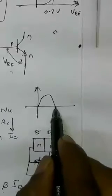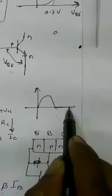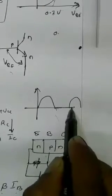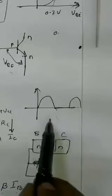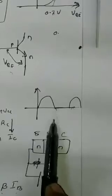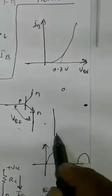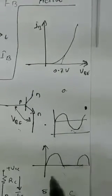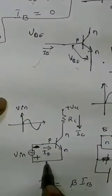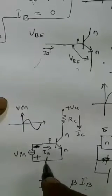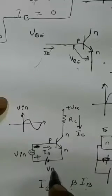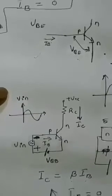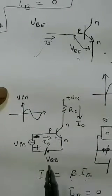During the negative half cycle there is no output. To get a minimum collector current even during the negative half cycle, we add a biasing voltage source VBB. This biasing voltage keeps the emitter-base junction forward biased at all times.